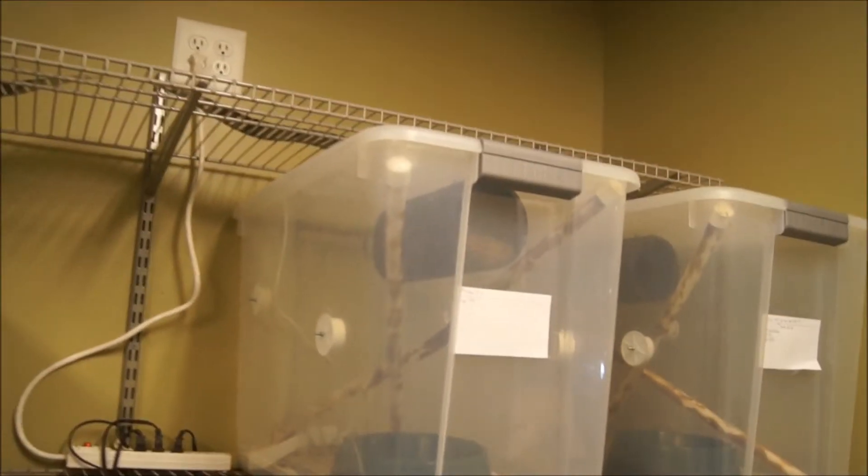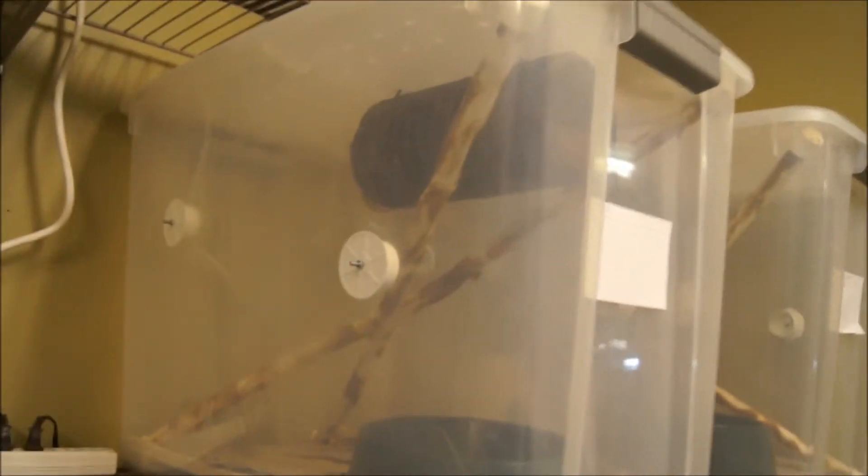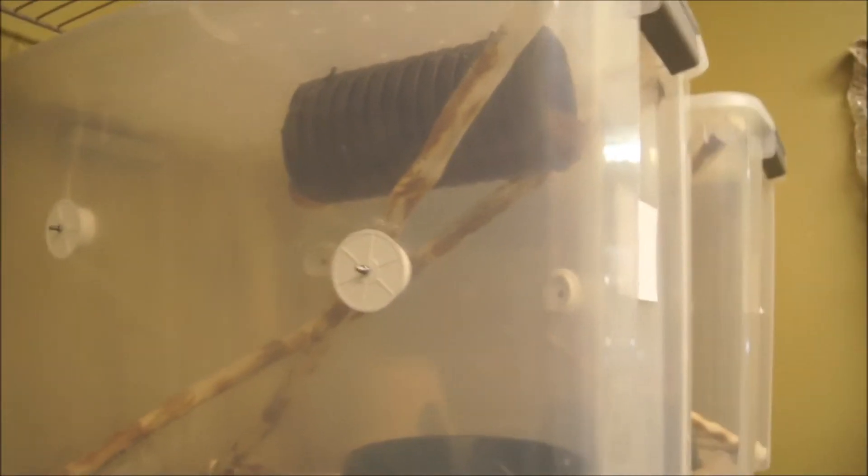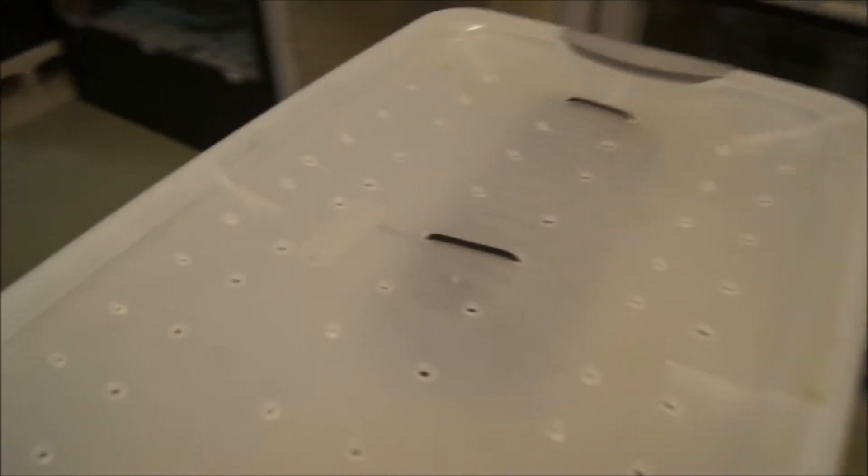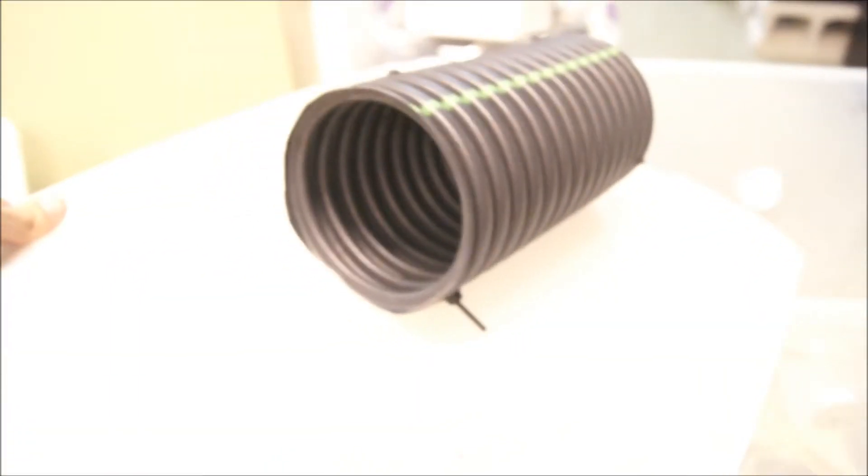Basically what we do is go to Home Depot and get, they sell like 10 foot sections of corrugated tubing for probably $5-ish. And then what we do is drill holes in the top of the tub and zip tie that corrugated tubing right on there.